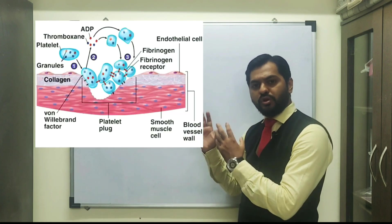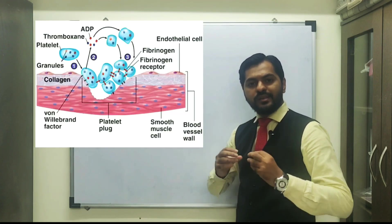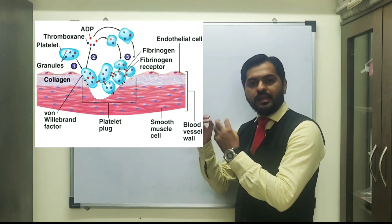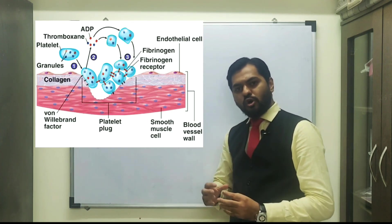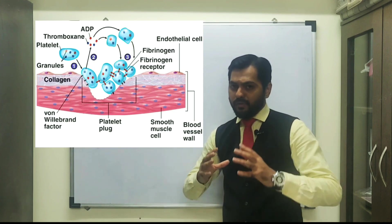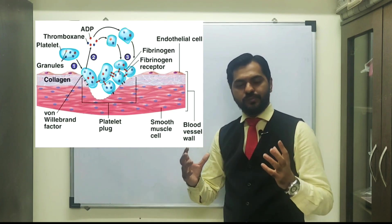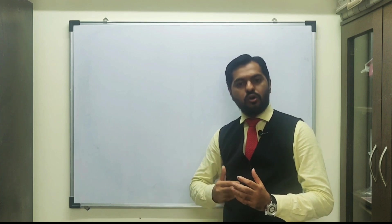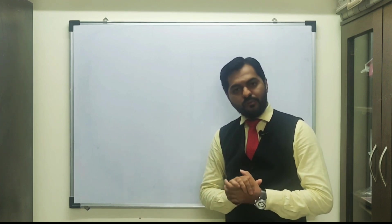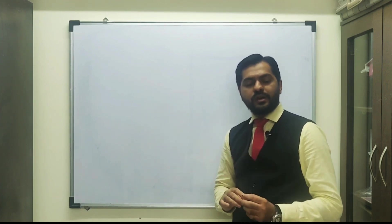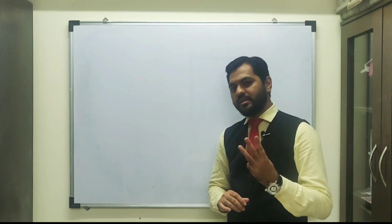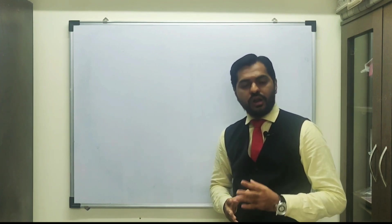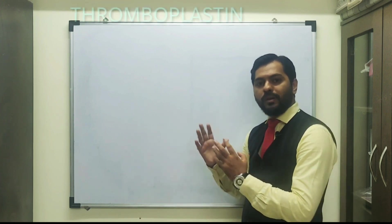At the site of injury or trauma to the blood vessel, there is aggregation of platelets and that platelet plug can stop a minor injury. But whenever the injury is quite major, then the entire clotting cascade or clotting pathway is activated, wherein the platelets secrete clotting factor number 3, known as tissue factor or thromboplastin.